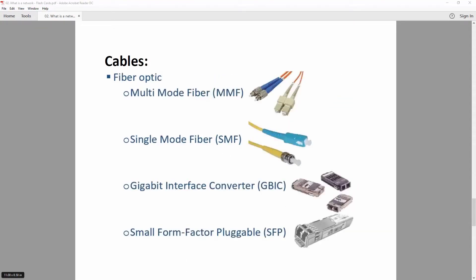Moving on to fiber optic cables — these are fast. Instead of using electrical signals, they use light. For short distances, most use LEDs, while for longer distances — hundreds of miles — they use lasers. There are two main types of fiber optic cable: multi-mode fiber and single-mode fiber.